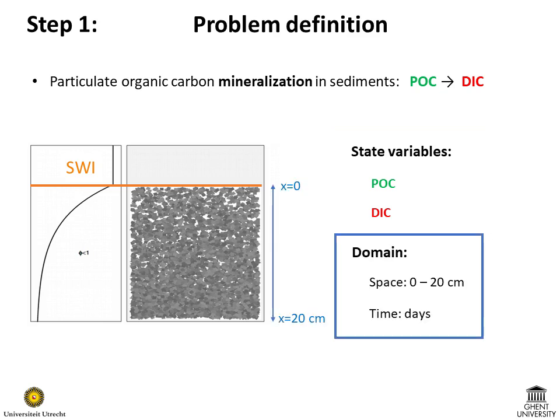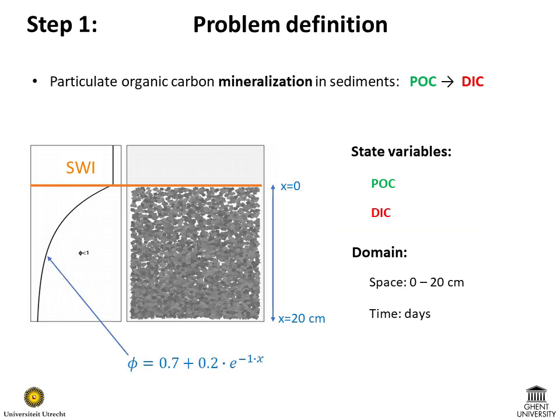We aim to model this process in a sediment column down to a depth of 20 cm. The length will be in cm and time will be in days. We assume that the sediment porosity is decreasing exponentially with depth, starting from a value of 0.9 at the sediment water interface and reaching a value of 0.7 after about 5 cm. We describe this variation using the function shown in blue.